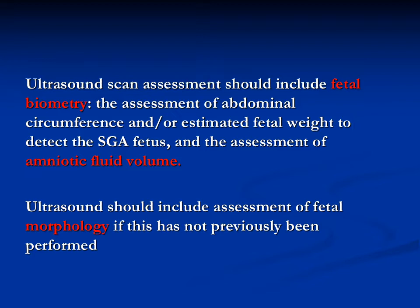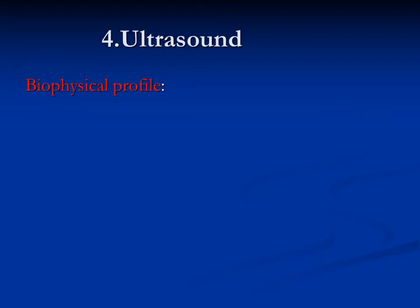The purpose of ultrasound: first, measure fetal biometry — abdominal circumference and estimated fetal weight — to determine if the fetus is normally grown or growth-restricted. Also assess amniotic fluid volume, which is reduced in fetal growth restriction because vasoconstriction reduces renal perfusion and urine output. Finally, assess fetal morphology, as abnormal fetuses may present with reduced fetal movement.